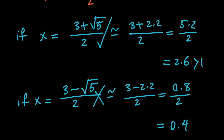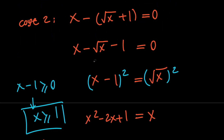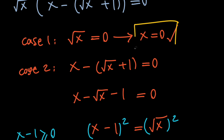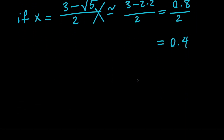So we found two solutions for our equation: x equals 0 and x equals (3 plus root 5) divided by 2. Great, so this brings us to the end of this video. Thank you for watching. Please consider subscribing for more content like this, hit the like button, and I'll see you later.